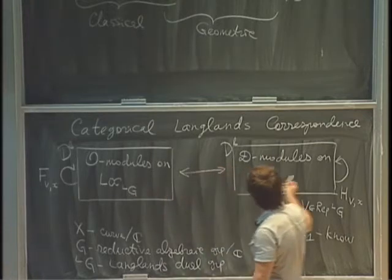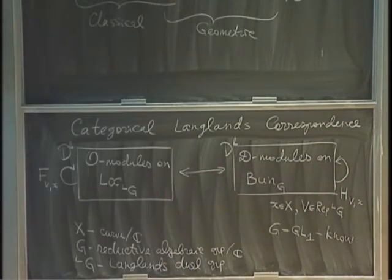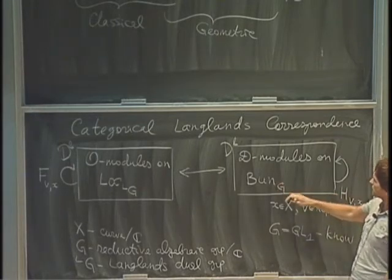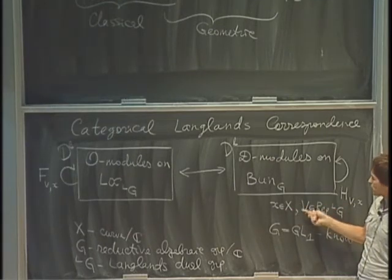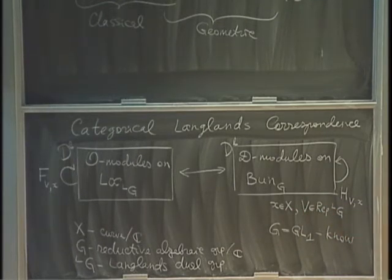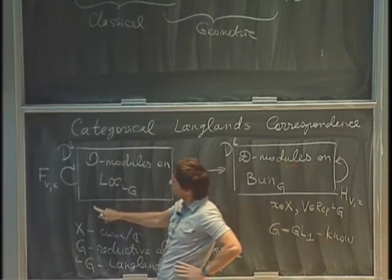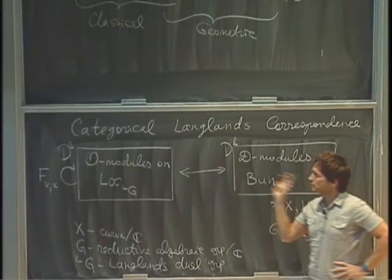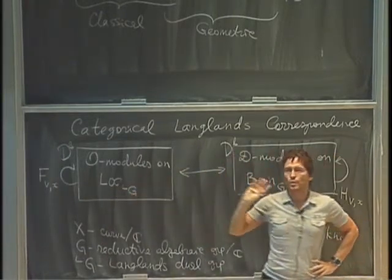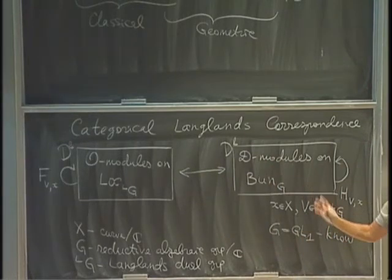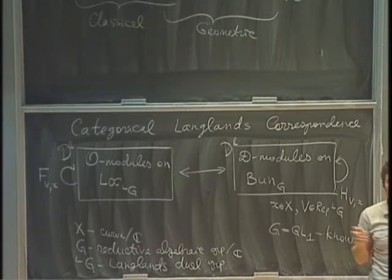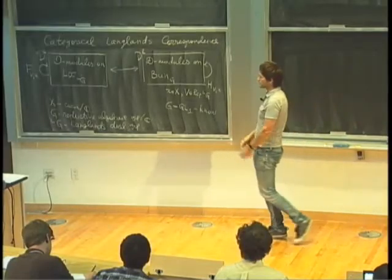The definition of the Hecke functors is rather non-trivial: you modify a G-bundle at a given point x, and the modification depends on the representation of the dual group. Different modifications are multiplied by different vector spaces, which are stalks of a certain perverse sheaf on the affine Grassmannian associated to the representation. In contrast, the Frobenius functors are very simple. This is a typical situation where something simple on one side, under this duality or Fourier transform, becomes complicated on the other side.